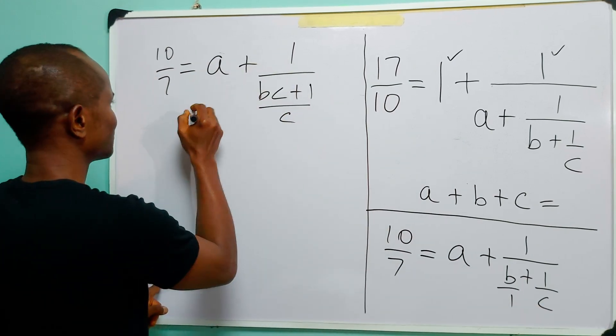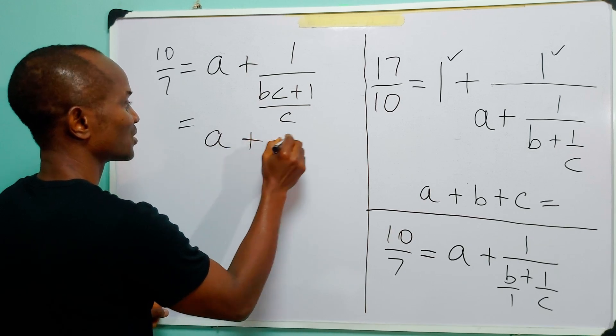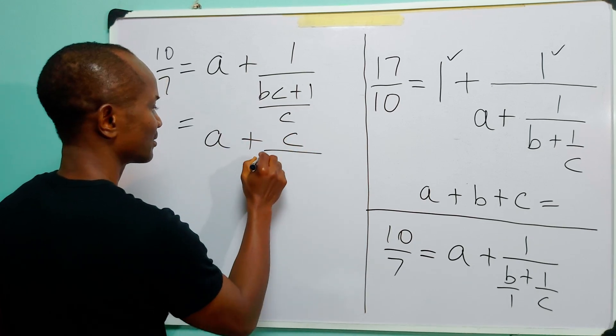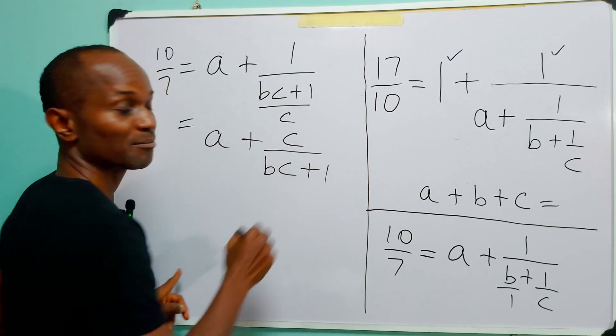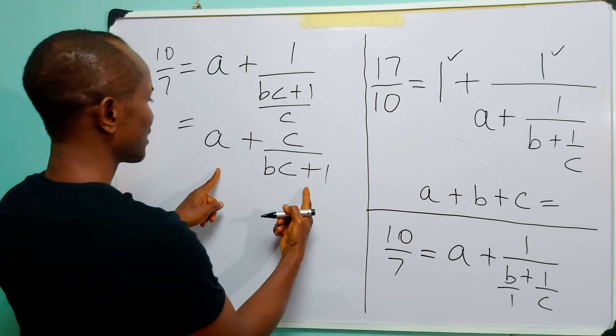Once more, you know that we can write this as A plus C over BC plus 1.